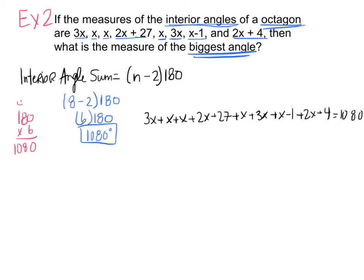Now I'm just going to combine like terms. So I've got 3x's, 4, 5, 6, 7, 8, 9, 10, 11, 12, 13, 14 x's. And I have 27 minus 1, that's 26, plus 4, that's 30, equals 1080.